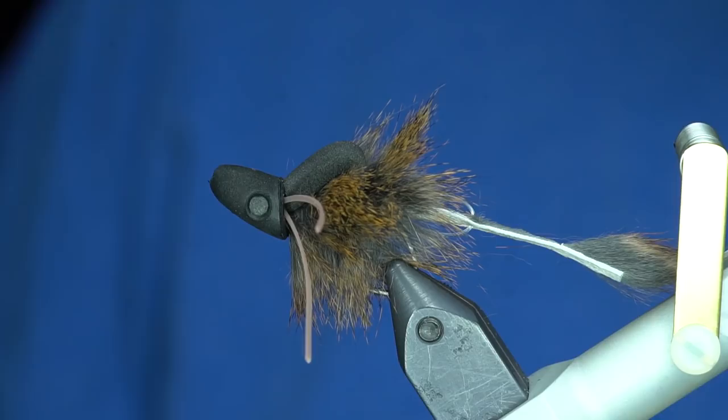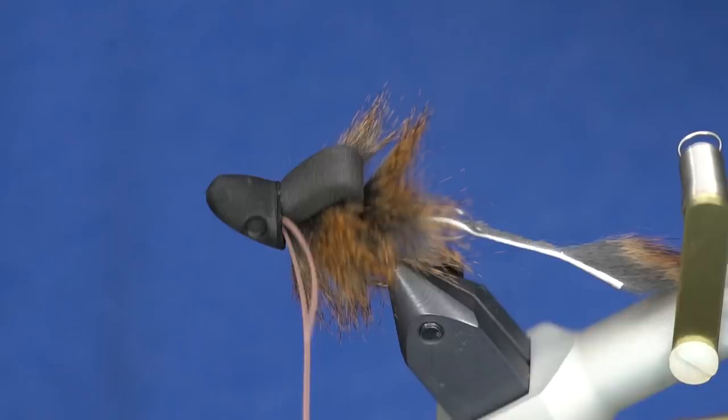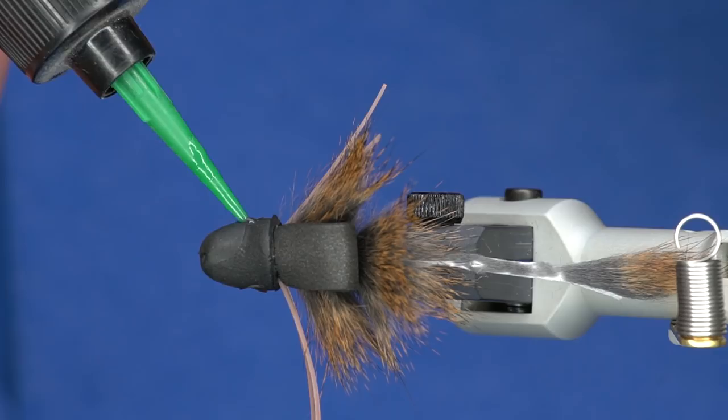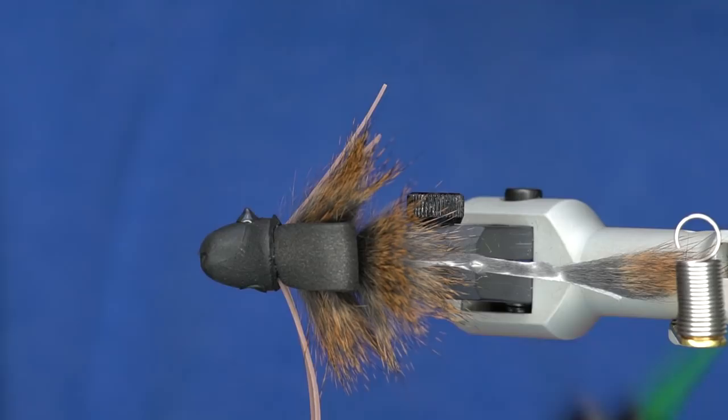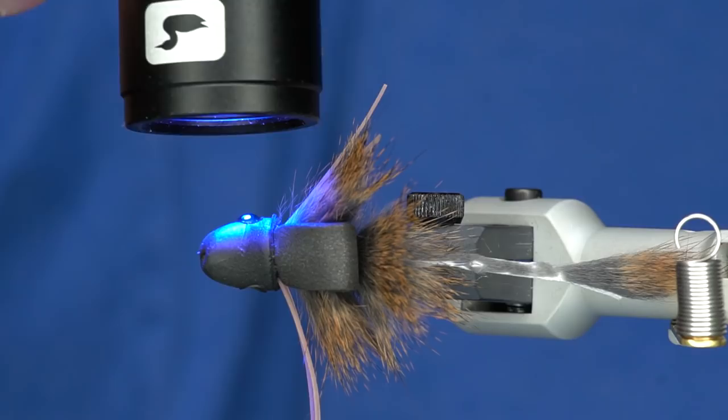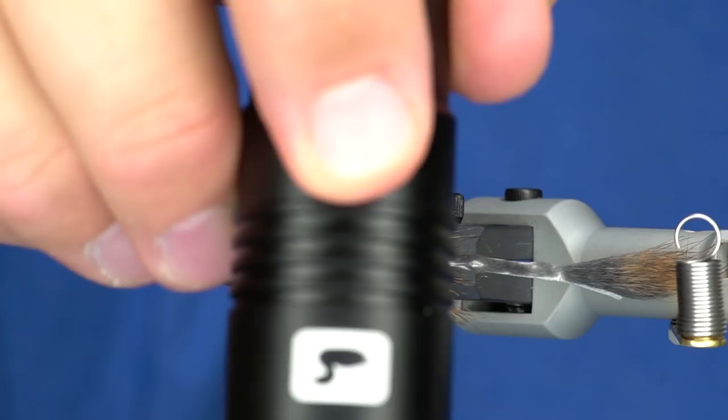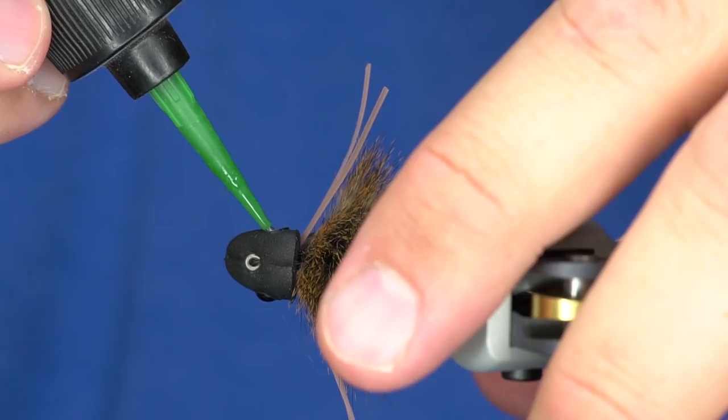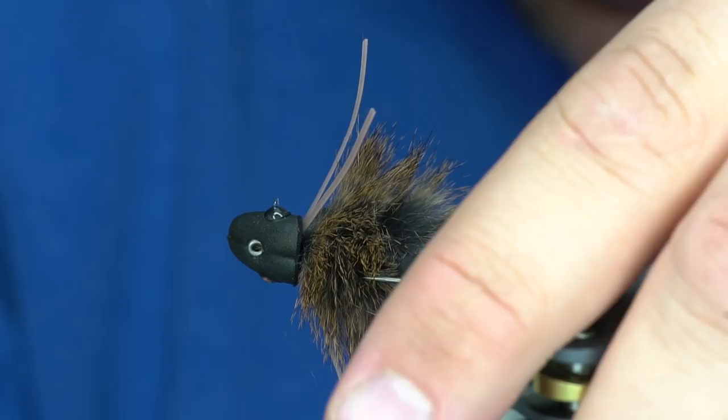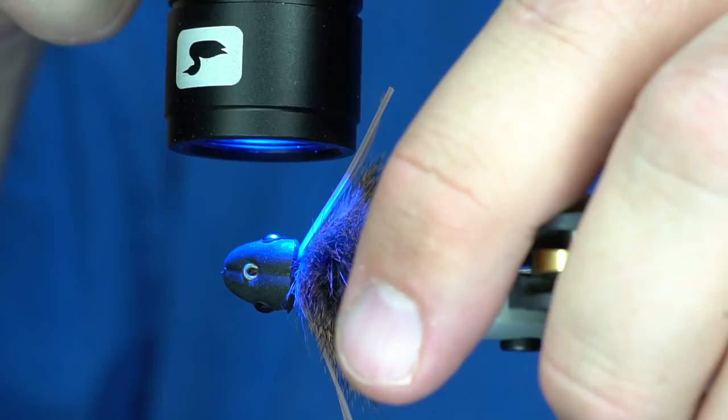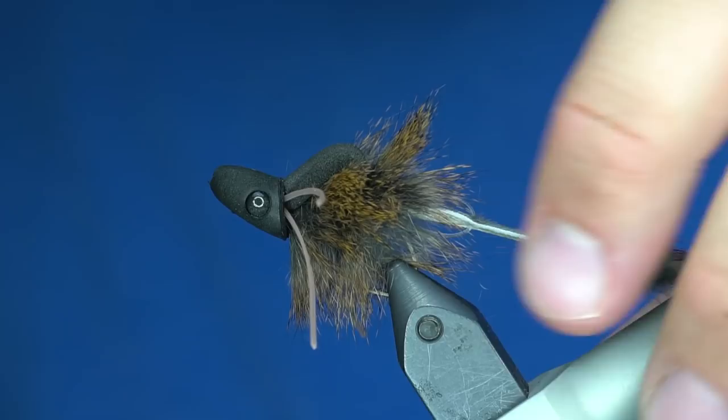Now for the head we're going to make this pretty basic. To make the buggy eyes we're using Loon Thick and the Infinity Light. If you have an Infinity Light, you hold it to turn it off.